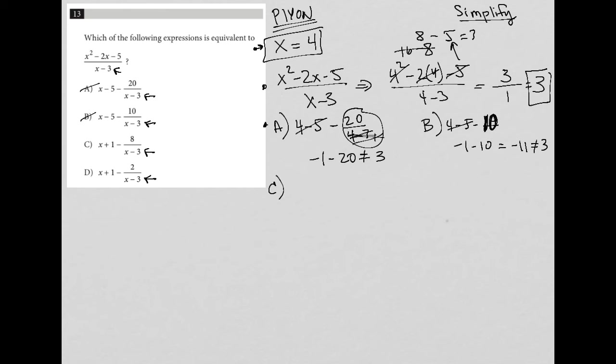Choice C, x plus 1. So I'd have 4 plus 1 minus 8 over 1, again. So hopefully you're seeing why it was valuable for me to choose x equals 4. In this case, I completely remove the fraction in my last term in each of these cases. So I just have 4 plus 1 minus 8. So 4 plus 1 is 5. 5 minus 8 is negative 3, which is not equal to positive 3. So C is also gone.